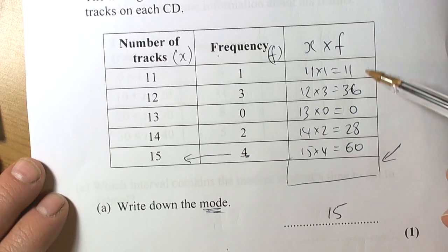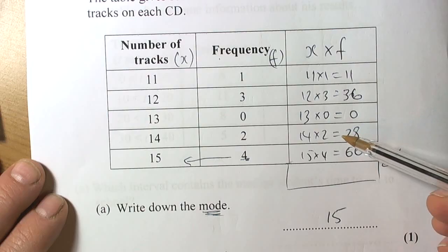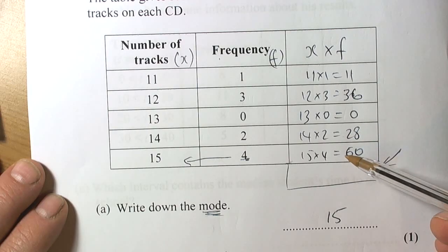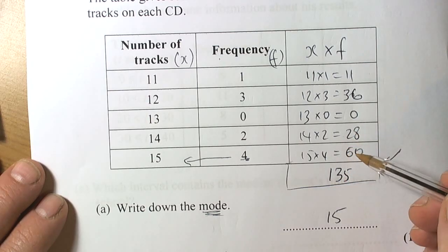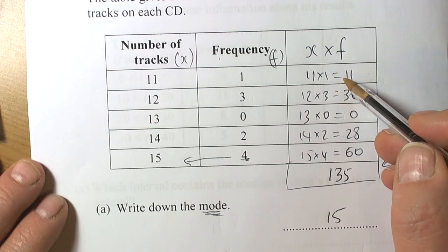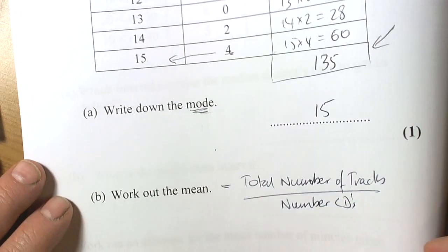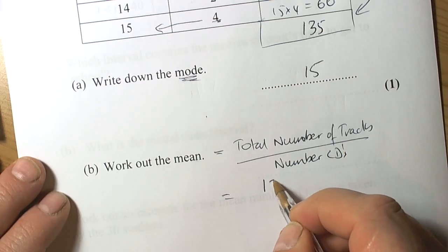Adding up: 11, 47, 67, 75, 135. Let me check backwards: 60, 88, 118, 124, 134, 135. So we've got 135 total tracks.